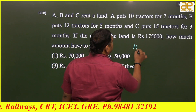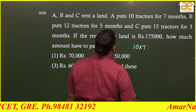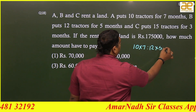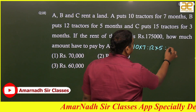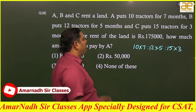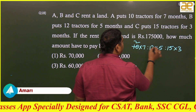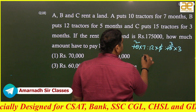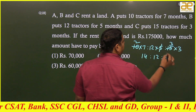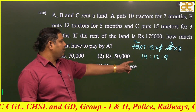So, 10 tractors into 7 months for A, 12 tractors into 5 months for B, and 15 tractors into 3 months for C. In all three, 5 is common, so cancel with 5. We get 2×7 = 14, 12 (with 5 cancelled giving 12), and 5×3 = 15 cancelled to 3×3 = 9. So the ratio is 14 : 12 : 9.